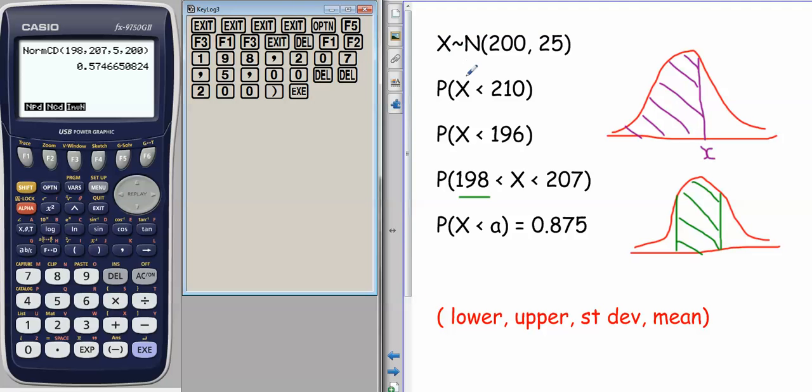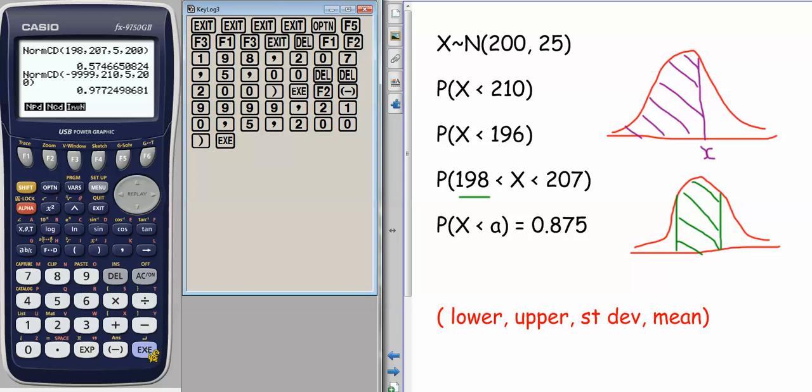If I wanted to do what seems like a more straightforward calculation, X less than 210, to put it into the calculator, you still need to give it a lower bound. Remembering that our lovely bell-shaped curve is actually infinite, we should really go from minus infinity up to 210. There isn't an infinity button on the calculator, so instead, if we just go minus something big, 9999, up to 210, and again, standard deviation is 5, mean is 200, then that gives us our value.